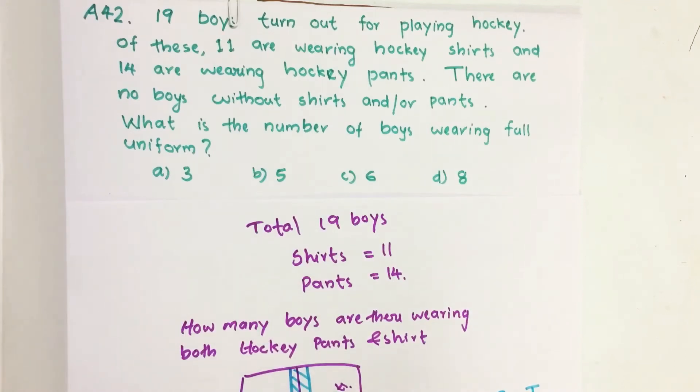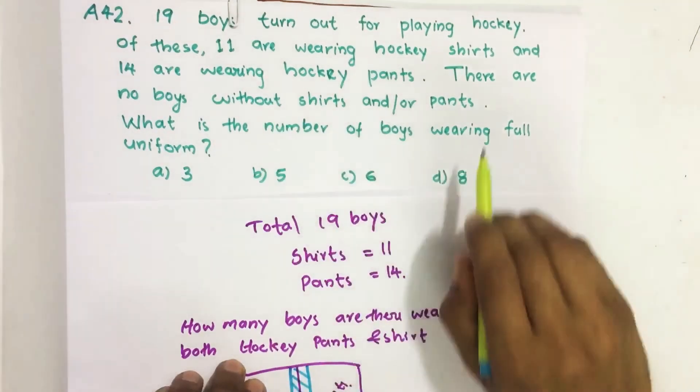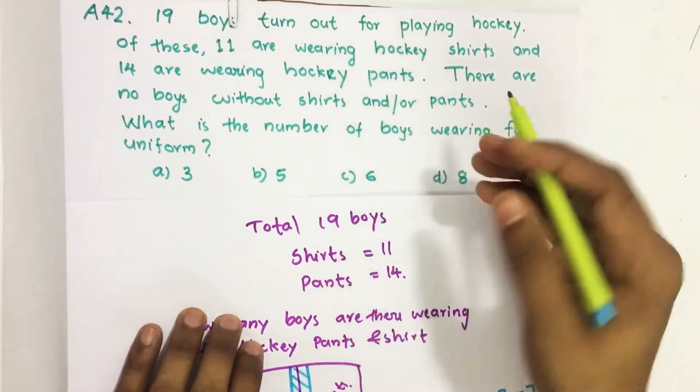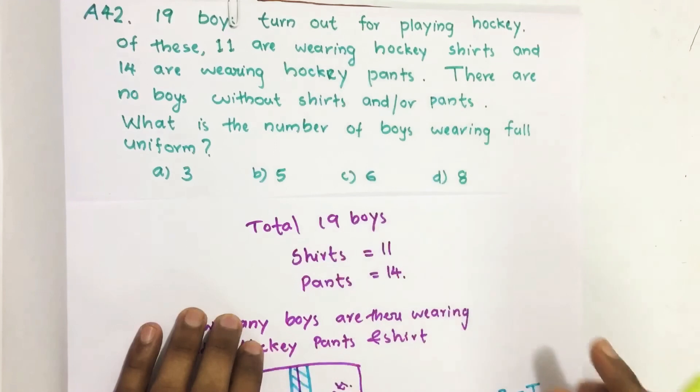19 boys turn out for playing hockey. Of these, 11 are wearing hockey shirts and 14 are wearing hockey pants. There are no boys without shirts and or pants. What is the number of boys wearing full uniform?